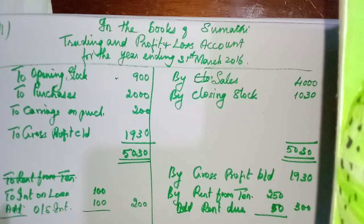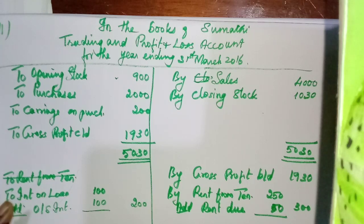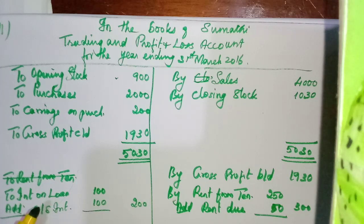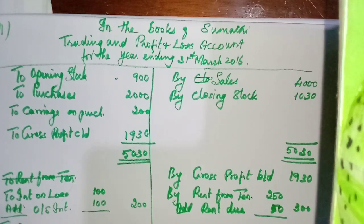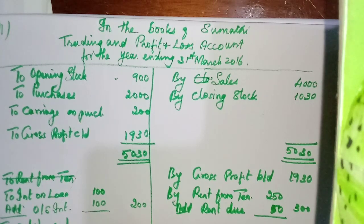Salary for the month of March 2016 is unpaid. But here no salary is given in the trial balance. So we will write outstanding salary 75.